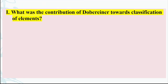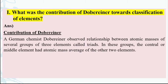Question number 1: What was the contribution of Dobereiner towards classification of elements? A German chemist Dobereiner observed the relationship between atomic masses of several groups of three elements called triads.